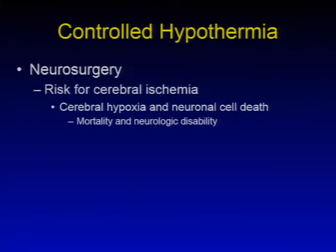Controlled hypothermia may also be used for neurosurgery if there is a risk for cerebral ischemia. Cerebral hypoxia and neuronal cell death leading to mortality and neurologic disability may be indicative of the need for controlled hypothermia.